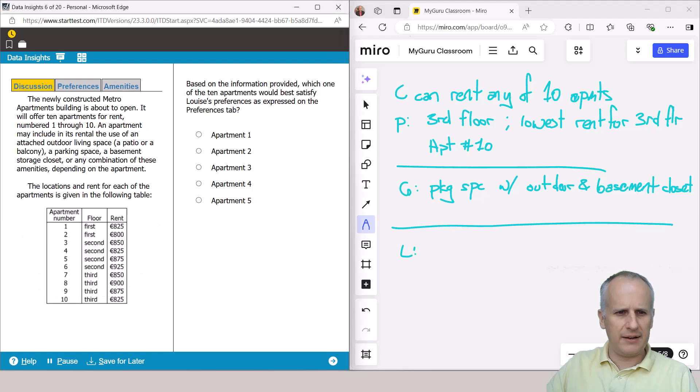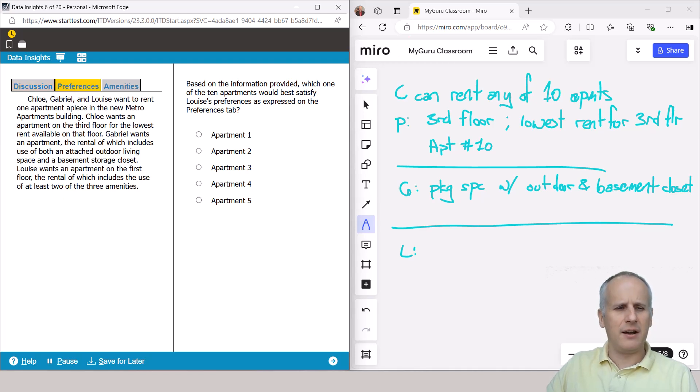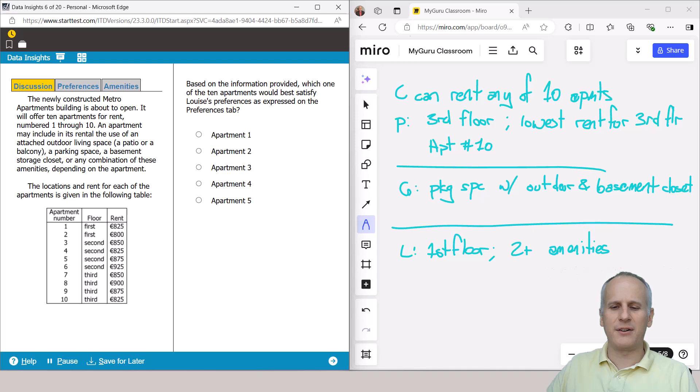So we've got to get L and we've got this discussion again, which we know is relatively extraneous. We just check for once to see if there's anything about Louise, but then we skip to the end of the preferences tab. And we see Louise wants an apartment on the first floor. So she wants first floor. She wants the rental of which includes the use of at least two of the three amenities. So two plus amenities. And we should note at this point that there's only the three amenities from the work we just did on the prior question regarding Gabriel.